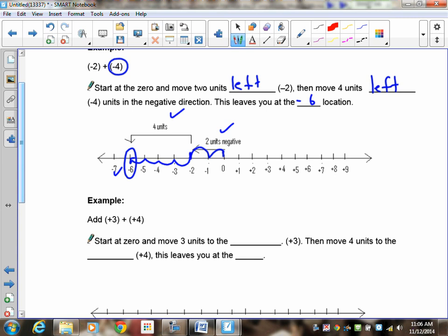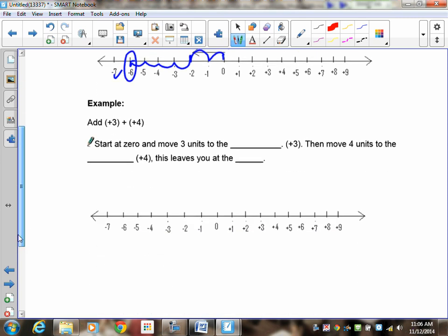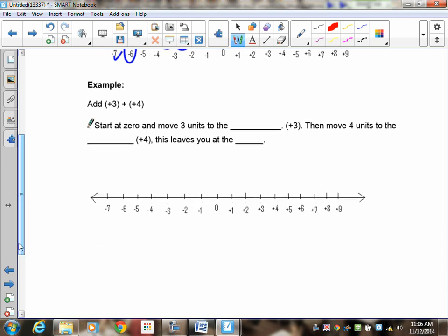Now what happens when I have two positives? Well, you start at the zero. You're going to move 3 units to the right. So here's my zero. 1, 2, 3. Then, because I'm going to be adding a positive 4 to that, I'm going to move 4 units to the right again, because I'm going 4, and it's a positive. 1, 2, 3, 4. Final answer, positive 7.